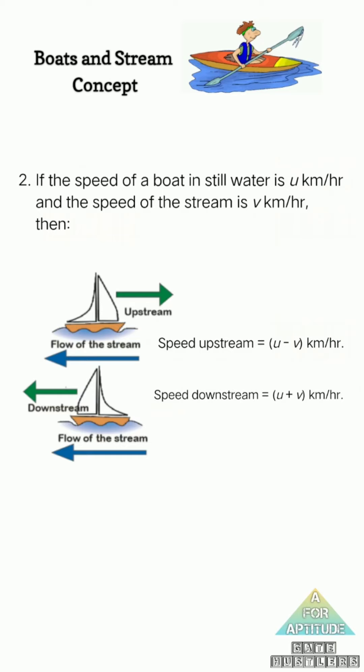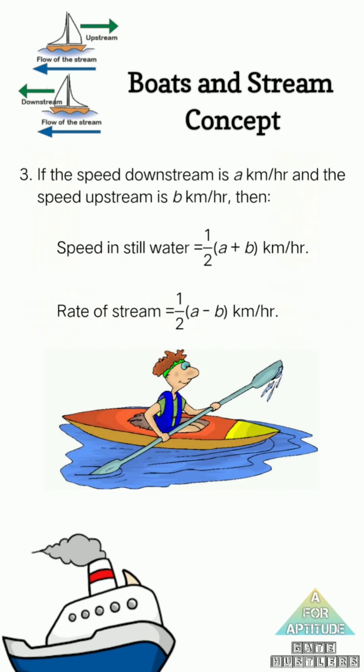If you travel in the same direction, your speed will increase in the same direction. So u plus v, kilometer per hour - that's the formula. And the third condition, the third condition is used in this problem. But that means we can see it in the same direction.